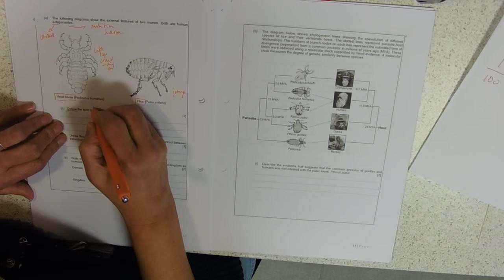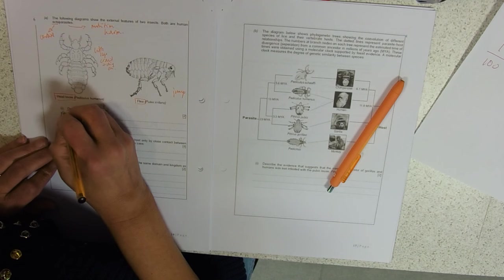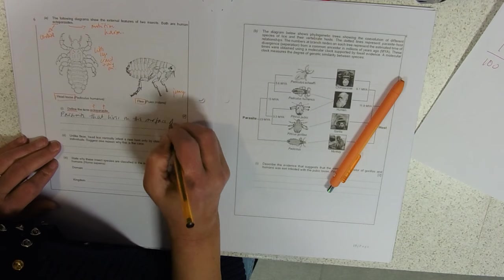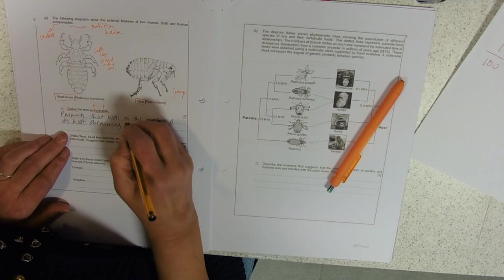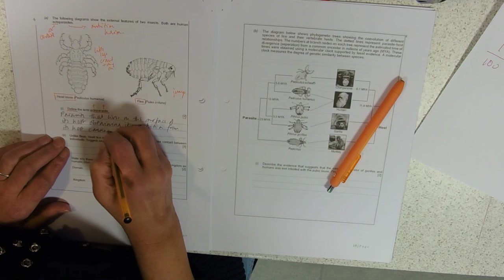Define ectoparasite. Two bits of it: the ecto and the parasite bit. That's what they're going to want, two marks. Ectoparasite. So this is a parasite that lives on the surface of its host, obtaining its nutrition from its host, causing the host harm.